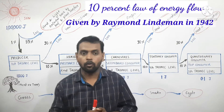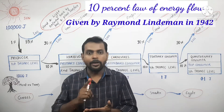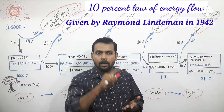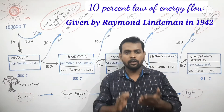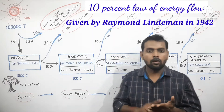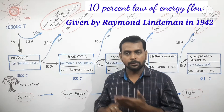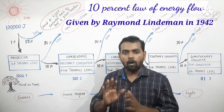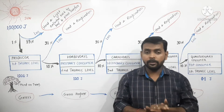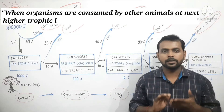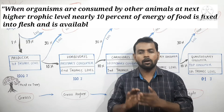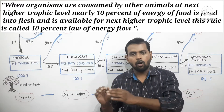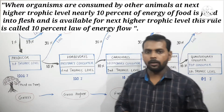What is a food chain? In an ecosystem, the food pathway is known as food chain. Now, what is the 10% law of energy flow? This law was given by Raymond Lindemann in 1942. Initially the term 'law' was not given by Lindemann — after proposing this rule, scientists worked on it and found that it was universal with no exception, which is why the term 'law' was added. When organisms are consumed by other animals at the next higher trophic level, nearly 10% of the energy of the food is fixed into flesh and is available for the next higher trophic level.